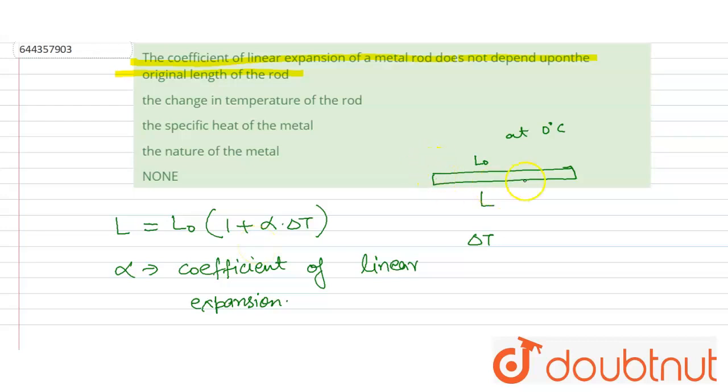So in this question we have to choose. The coefficient of the linear expansion of the metal rod does not depend. So it does not depend upon the temperature of the rod, the specific heat of the metal rod. It depends upon the nature of the metal. So it will be correct and this is also correct.